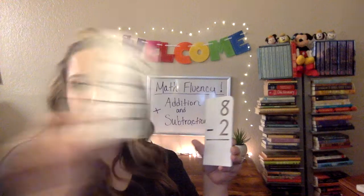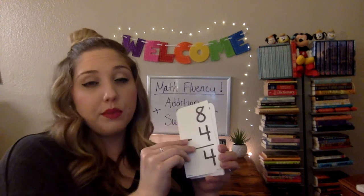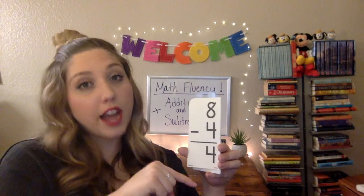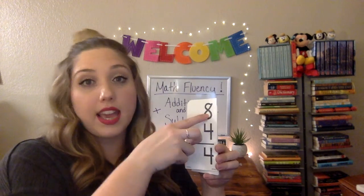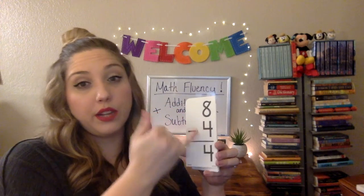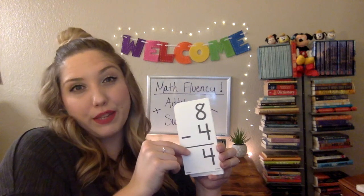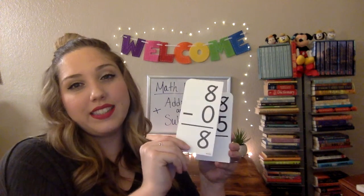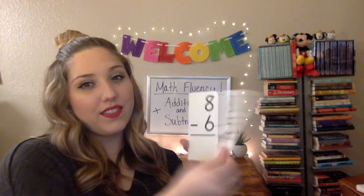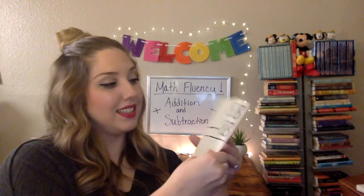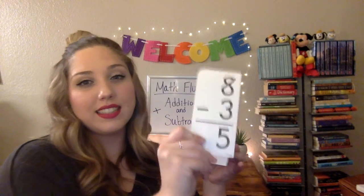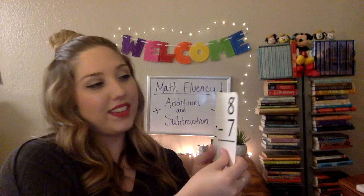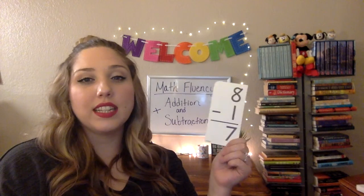8 minus 4 is 4. When we talk about doubles facts from the addition video — 4 plus 4 is a doubles fact equaling 8 — your doubles facts will help you in subtraction too. If you know 4 plus 4 equals 8, then 8 minus 4 must be 4. 8 minus 2 is 6. 8 minus 0 is 8. 8 minus 5 is 3. 8 minus 6 is 2. 8 minus 8 is 0. 8 minus 3 is 5. 8 minus 7 is 1. Last but not least: 8 minus 1 is 7.